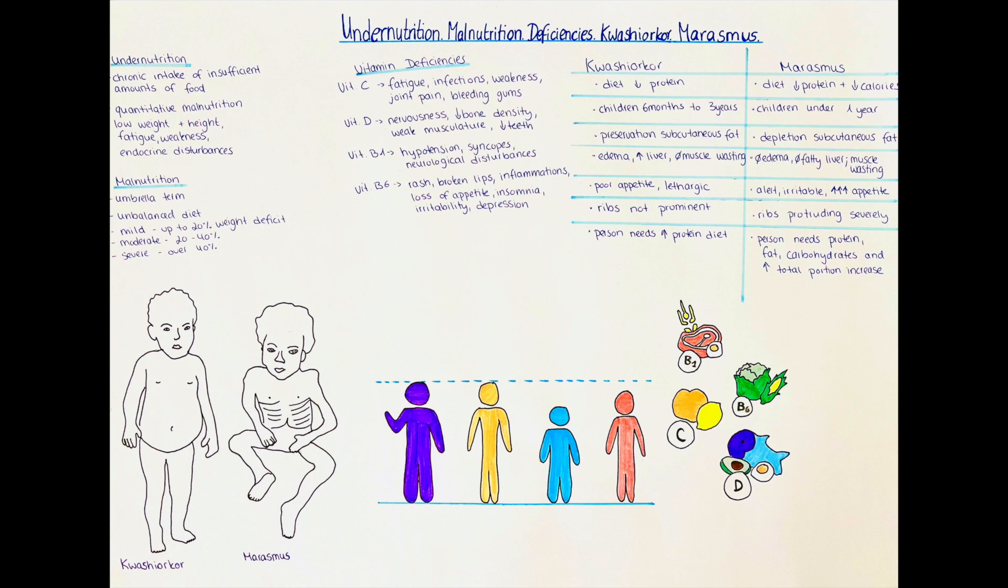Vitamin D deficiency shows with increased nervousness, decrease in bone density or in children rickets, weak musculature and decrease in teeth formation. Vitamin D is formed by the body itself, but only under the influence of sufficient amounts of sunlight. In some areas of the world, with lack of sufficient sunlight to provide the body with enough vitamin D, it might be necessary to supplement it after talking to a doctor.